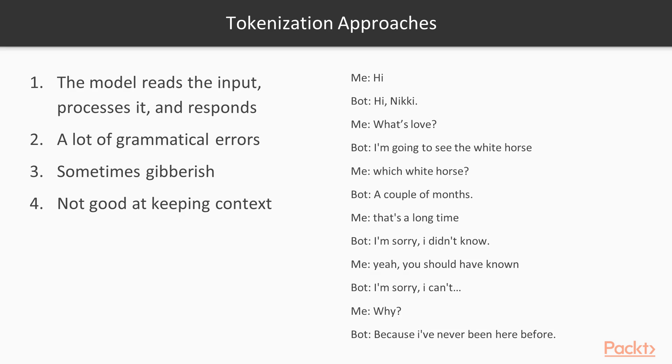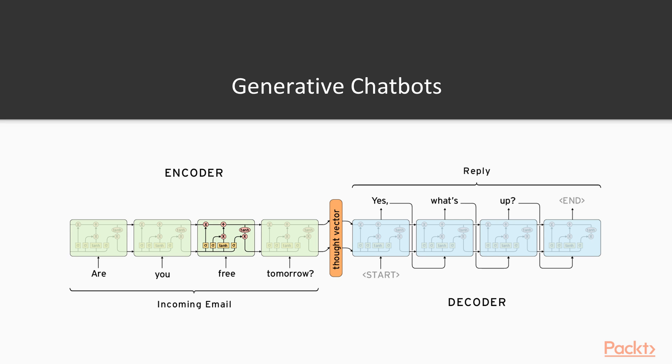As you can see, it doesn't make sense. Generative chatbots are built using a neural architecture called sequence to sequence. We will discuss sequence to sequence later in this course.